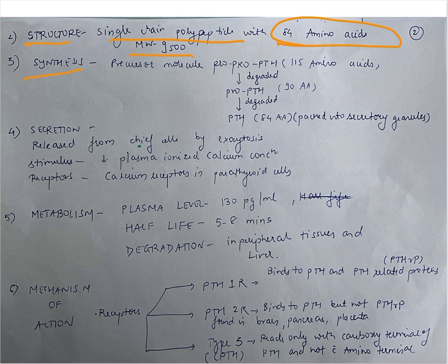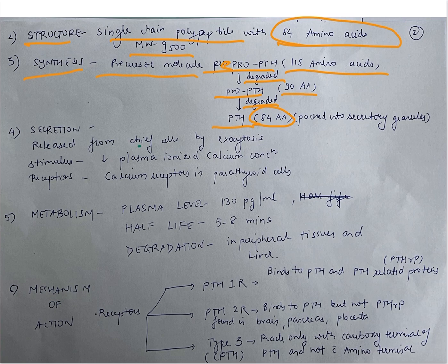Synthesis: the precursor molecule is called pre-pro-PTH, which has 115 amino acids. It is degraded to form pro-PTH, which has 90 amino acids. Pro-PTH is further degraded to form the main hormone PTH, which has 84 amino acids, and it is then packed into secretory granules for further use.